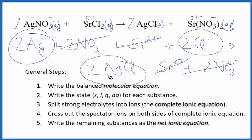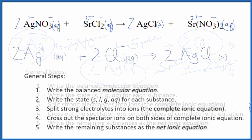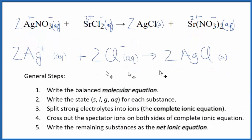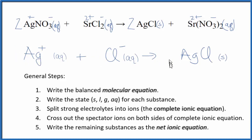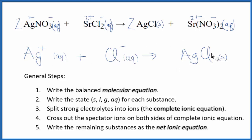I'll clean it up and write the states, and we'll have our net ionic equation. This is the net ionic equation for silver nitrate plus strontium chloride. You can see our coefficients are two, two, two — we can reduce that down to a lower number, we could just call that one, one, one. We don't write the one, giving a more compact net ionic equation. You can see the positive and the negative balance out; we have a neutral product, so charge is conserved. And mass is also conserved — we have one silver, one silver, one chlorine, one chlorine. This is Dr. V, and thanks for watching.